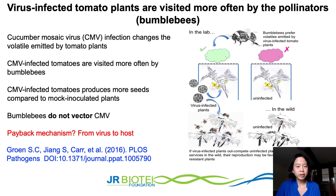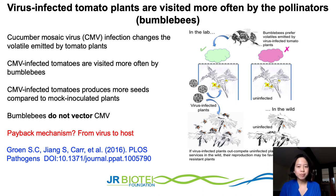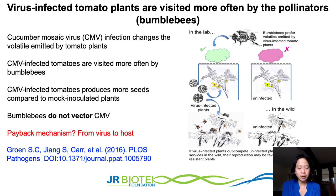On tomato plants, virus-infected tomatoes are visited more often by bumblebees, offering pollination benefits. One thing to remember is that bumblebees do not vector CMV. The hypothesis is that this may be some kind of payback mechanism — viruses make tomato more attractive to pollinators as a payback to their host. As a closing point on this topic: not all virus infections are detrimental; some are beneficial, and some have a neutral effect on the host plant.